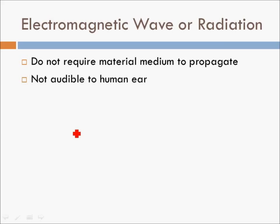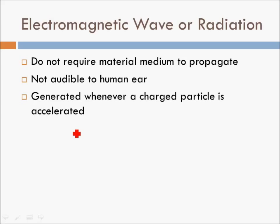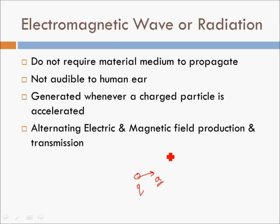Electromagnetic waves are not audible to the human ear, unlike sound waves. You cannot hear sunlight, but you can feel it or see part of it. They can be generated whenever a charged particle is accelerated — take any charged particle, positive or negative, and accelerate it. The resulting wave produced by that acceleration is an electromagnetic wave, always accompanied by alternating electric and magnetic field production and transmission.